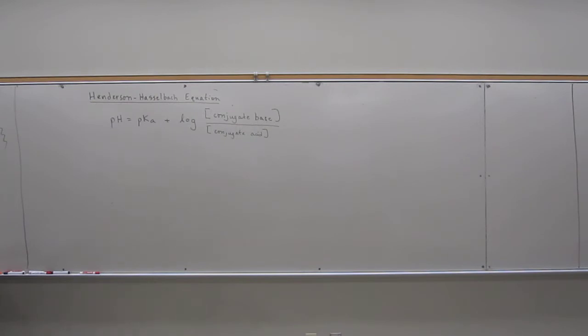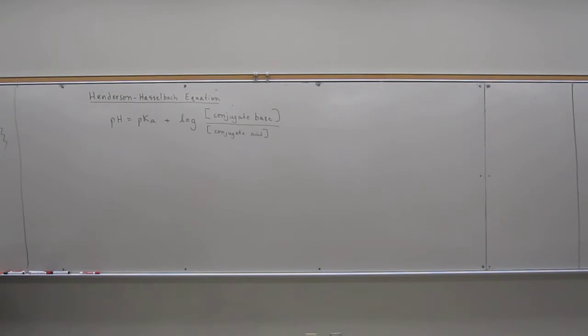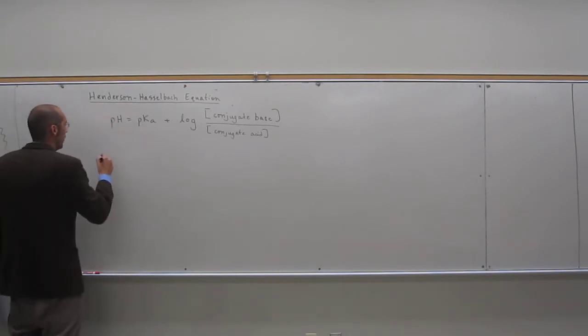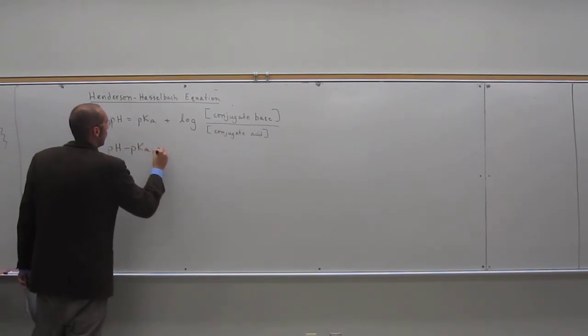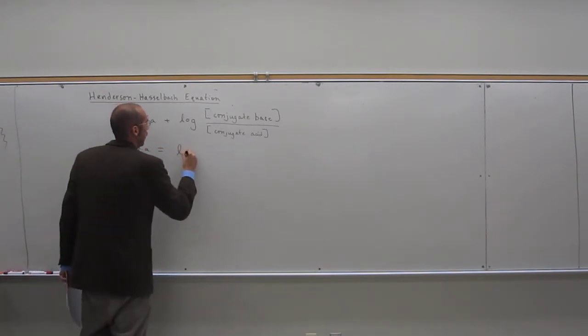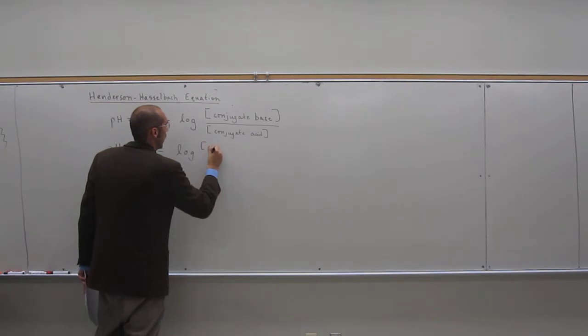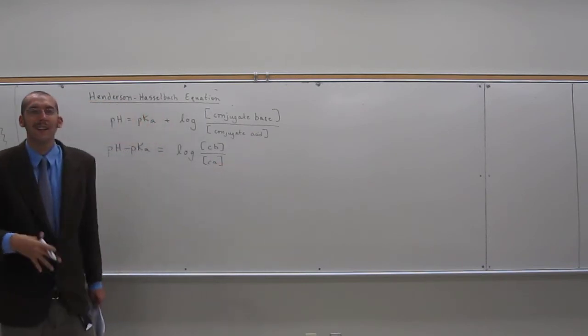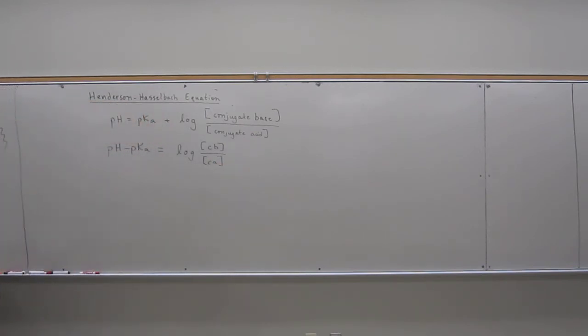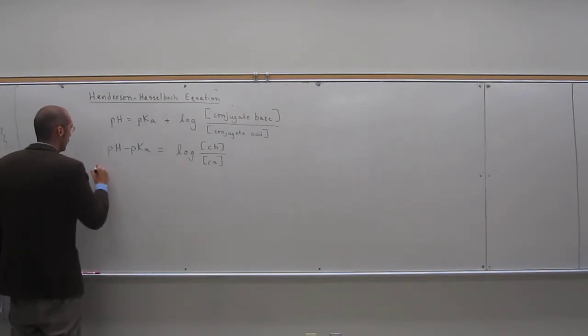So remember we can switch this around to where we can take pKa on the other side, so pH minus pKa equals the log. And I'm just going to, instead of CA and conjugate base and conjugate acid, I'm going to put CB and CA. So CA you can think of as the acid or conjugate acid, same thing. And then to get rid of this log, just take everything to the 10th.